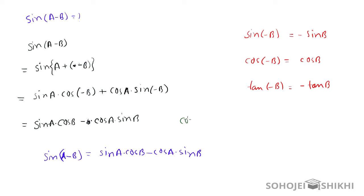It is very simple. Cos of A minus B is exactly the same method. It will be cos A cos B plus sin A sin B.